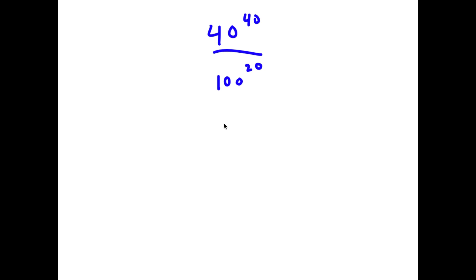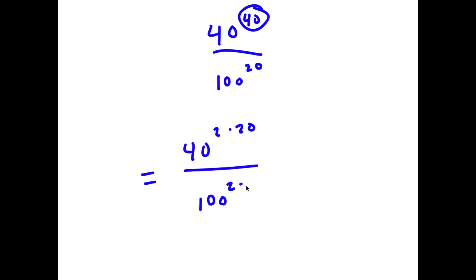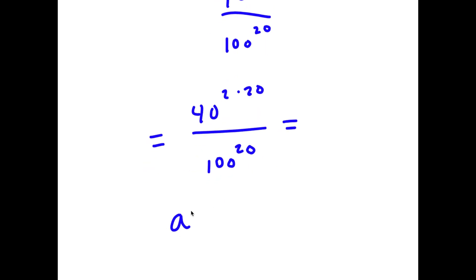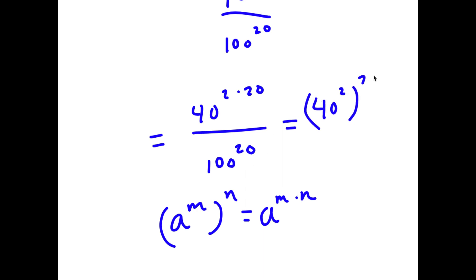In this problem I have 40 to the power of 40 over 100 to the power of 20. To solve this, I'm going to first rewrite 40 as 2 times 20, so now I have 40 to the power of 2 times 20 over 100 to the power of 20. Since a to the power of m to the power of n equals a to the power of m times n, I can write 40 to the power of 2 times 20 as 40 to the power of 2, to the power of 20.